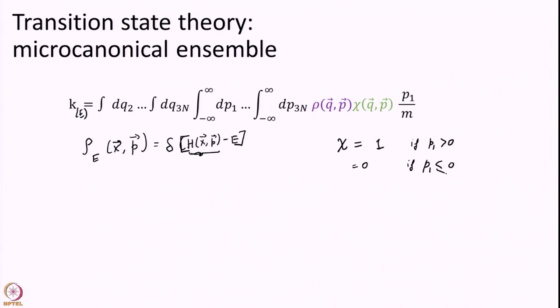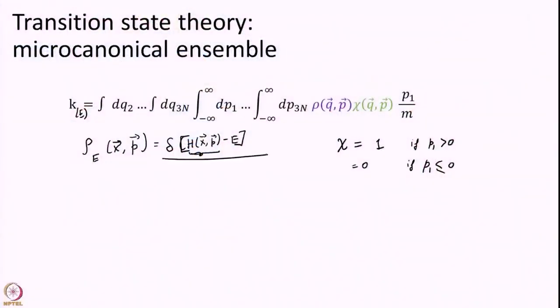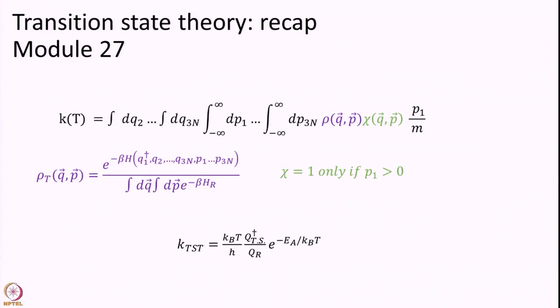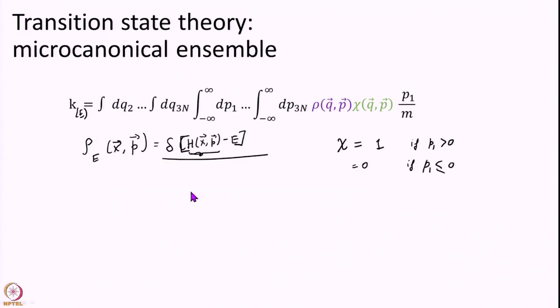We have changed our density from a temperature density to an energy density. I had made a mistake — this should be normalized. Even in the previous slide our rho_T was normalized with a full integral. So we must write a similar normalization integral here: the integral over dq dp of delta of H(x,p) minus E. This delta function is essentially constraining those x and p points for which the Hamiltonian takes the value E, so the energy of the system equals whatever energy I specify.